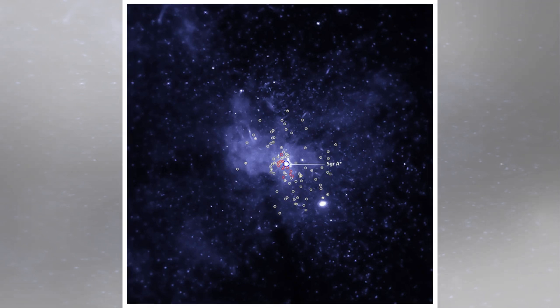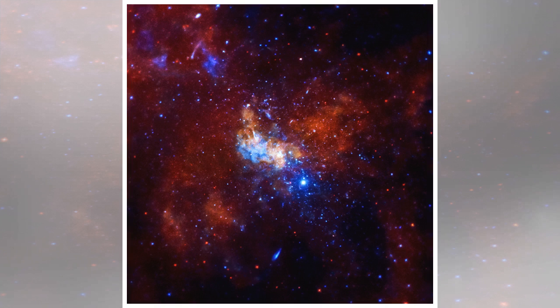This black hole bounty consists of stellar-mass black holes, which typically weigh between 5 to 30 times the mass of the Sun. These newly identified black holes were found within three light-years, a relatively short distance on cosmic scales, of the supermassive black hole at our galaxy center known as Sagittarius A*, or Sgr A*.